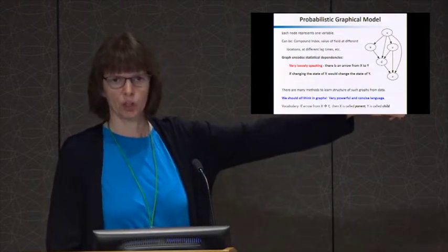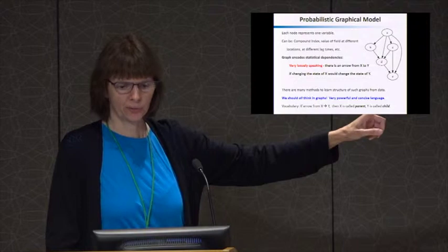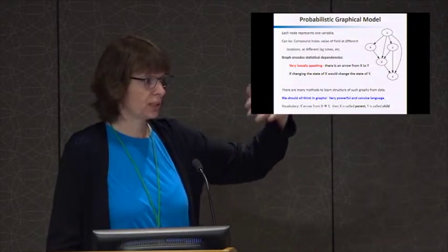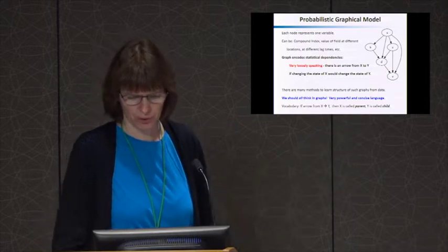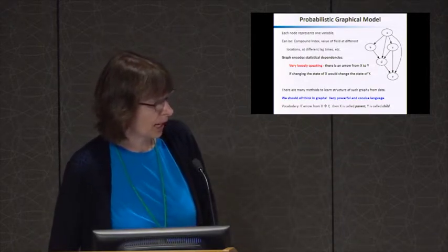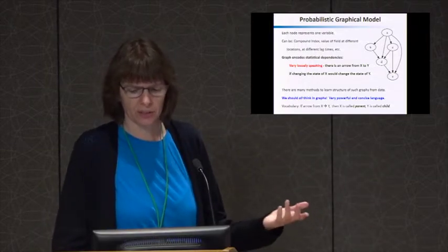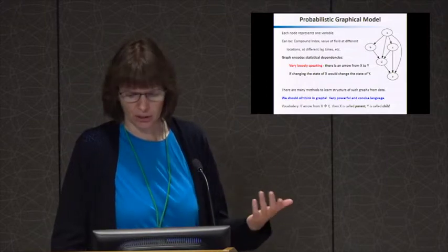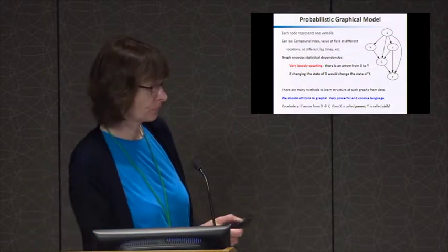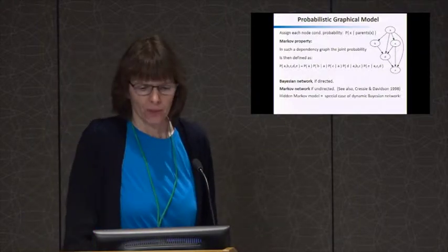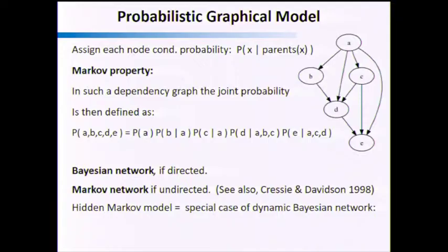We should all be thinking in terms of graphs because they are a very powerful and concise language. It would be much easier to explain causality using these graphs. A piece of vocabulary: in computer science, if there's an arrow from x to y, we call x the parent of y, and y is the child of x. A probabilistic graphical model is a graph where I also assign a conditional probability to each node, conditioning only on its parents. For node a with no parents, I have p(a). For b with one parent, p(b|a). For d with three parents a, b, c, I have p(d|a,b,c).